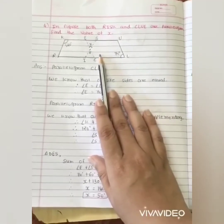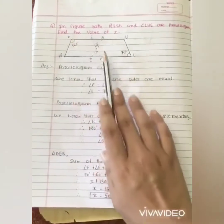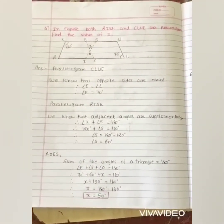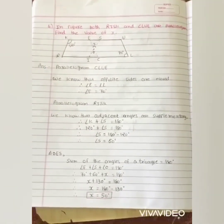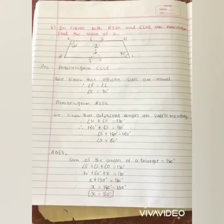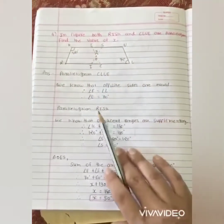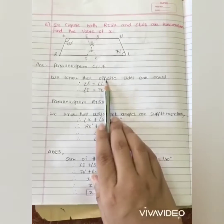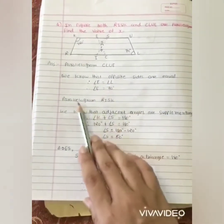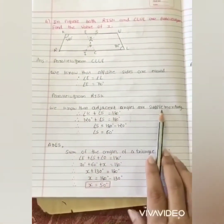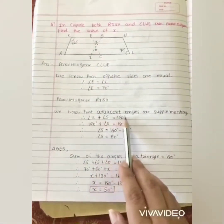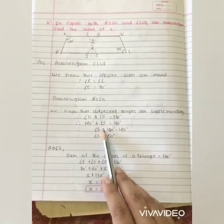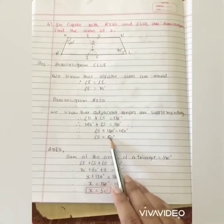RISK and CLUE are parallelograms. Find the value of X. In the figure, both RISK and CLUE are parallelograms drawn so that they intersect each other. In parallelogram CLUE, opposite angles are equal, therefore angle E equals angle L, so angle E equals 70 degrees. In parallelogram RISK, adjacent angles are supplementary, therefore angle K plus angle S equals 180 degrees. Since angle K equals 120 degrees, angle S equals 180 minus 120 degrees, so angle S equals 60 degrees.